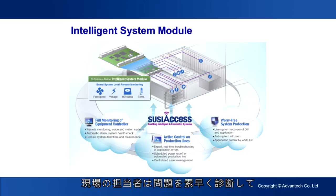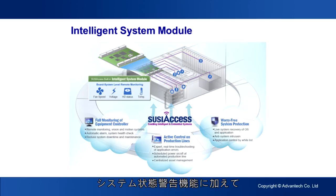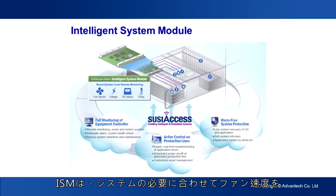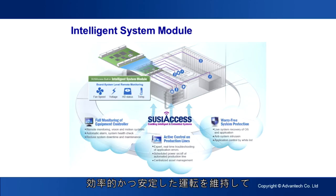Field staff can quickly diagnose the problem and replace the fan. In addition to the system status warning capability, Smart Fan technology enables ISM to dynamically adjust fan speed according to system needs, so as to maintain efficient and stable operation while also reducing noise and saving power.